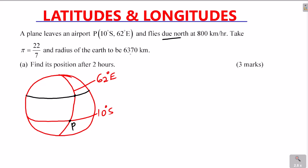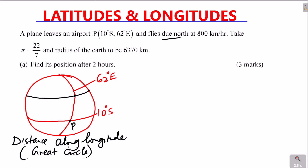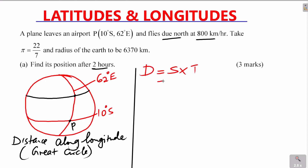Given the radius of the earth as 6370, we need to find the position after two hours. The distance traveled is along the longitude, which is a great circle distance. Using speed times time: 800 kilometers per hour times 2 hours gives us 1600 kilometers.